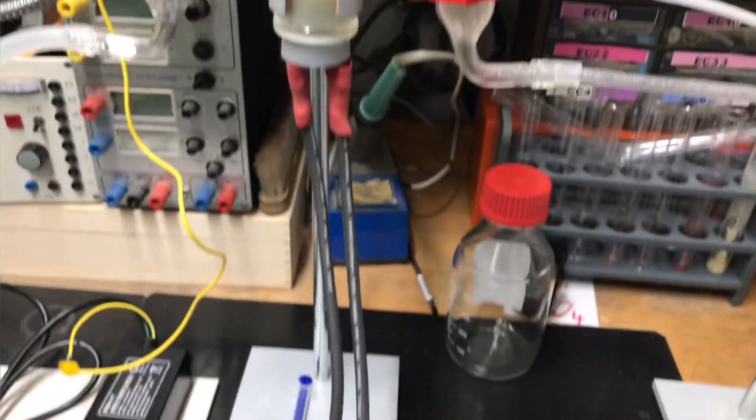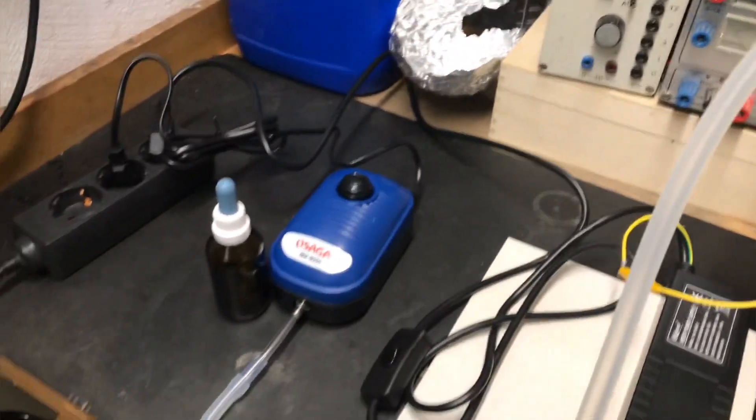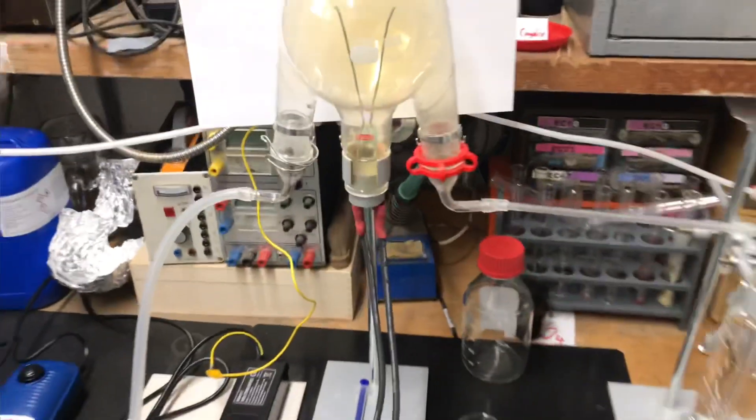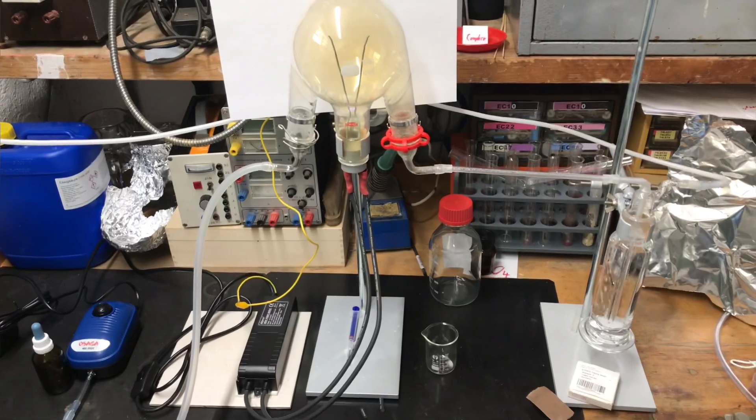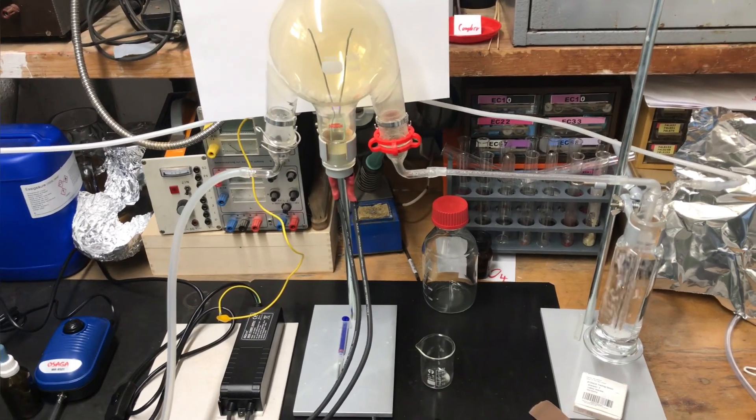This is the apparatus that I am going to use: a three neck round bottom flask with a spark gap connected to a high voltage transformer, an aquarium pump to pump air through our three neck round bottom flask, and a gas washing bottle to wash our resulting nitrogen dioxide.